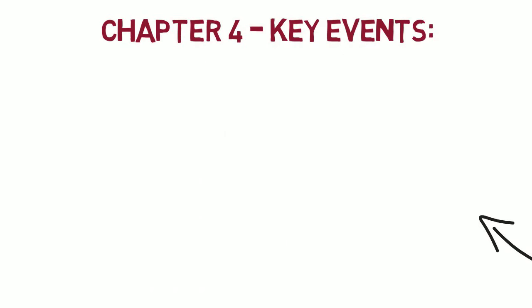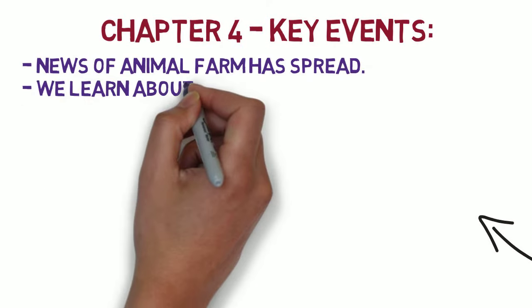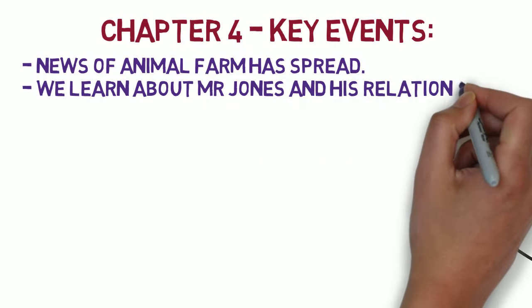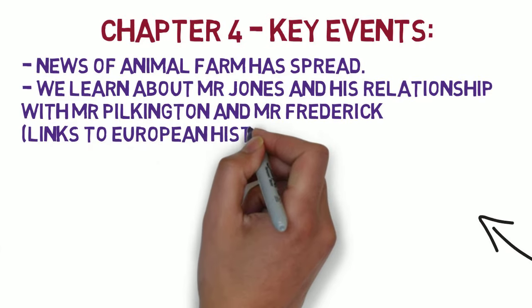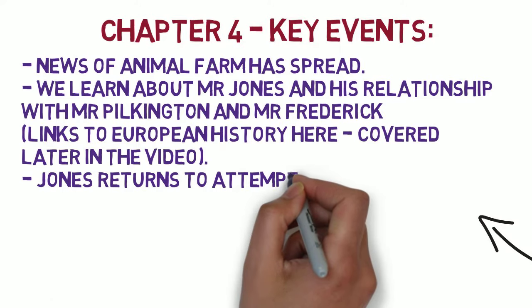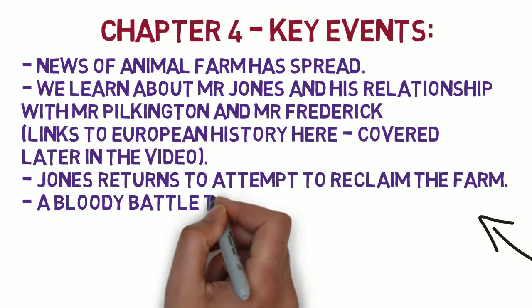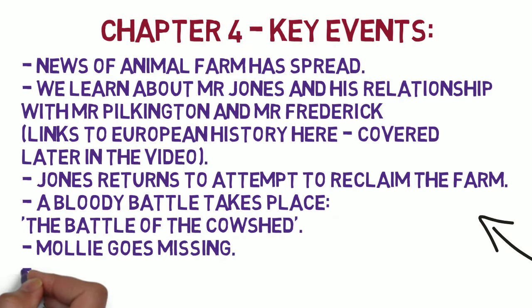You could say this is an outward facing chapter, at least at the start, because we learn about events outside of the farm. This chapter is also dominated by events that show the relationship between humans and animals. Key events: news of Animal Farm has spread; we learn about Mr Jones and his relationship with Mr Pilkington and Mr Frederick — there are links to European history here which are covered later. Jones returns to attempt to reclaim the farm, a bloody battle takes place named the Battle of the Cow Shed, Molly goes missing, and military decorations are issued.